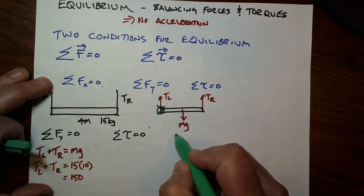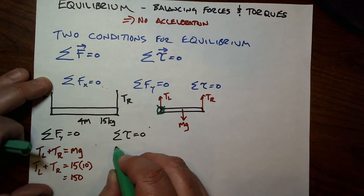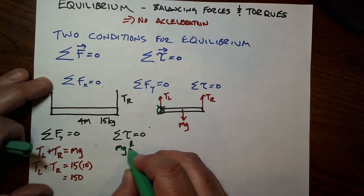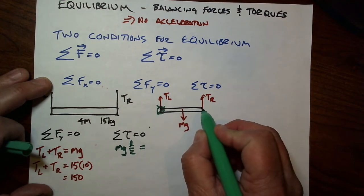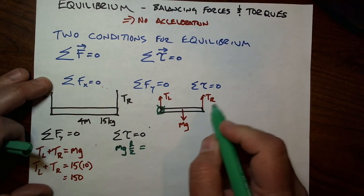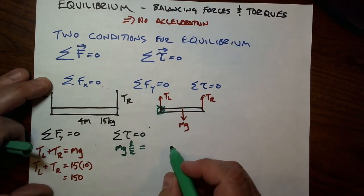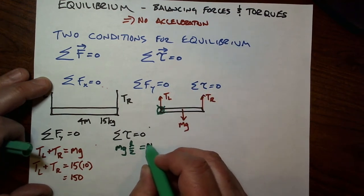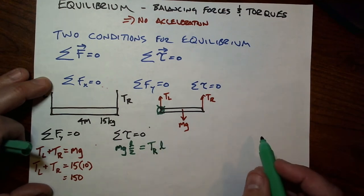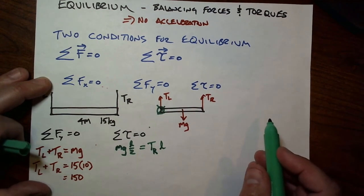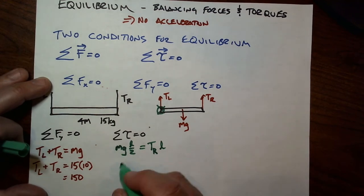So we have two torques. One is going to try to turn it clockwise, and that torque is M times G, that's the force, times the distance L over 2, that it is away from the pivot point. And on the other side, this string on the right-hand side, this rope, is going to be pulling it in the counterclockwise direction. And that's a force of TR acting at a distance L away from the pivot point. And this one has no contribution.